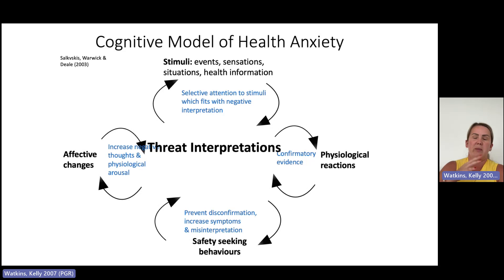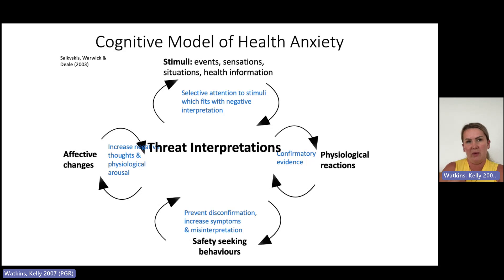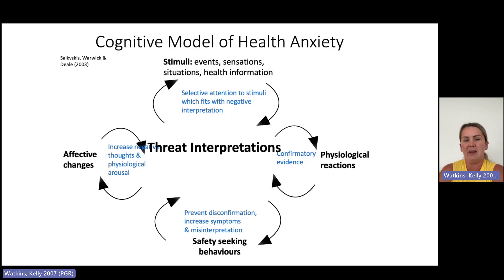Then you have the safety-seeking behaviours. Things that disconfirm what they are believing are disregarded or ignored, and anything that could prove disconfirmation is sometimes prevented. Using the running example, they may push themselves really fast when running — so it won't be the faster pace causing increased breathlessness, it must be something going on inside them. Or they may stop running altogether. It's anything that prevents disconfirmation, and in doing so they're not proving that their anxiety is wrong, so the threat continues to increase.